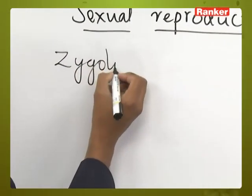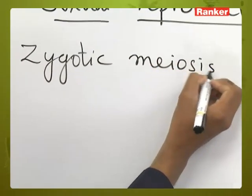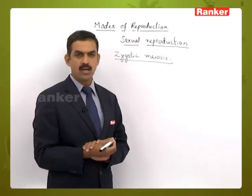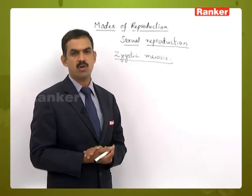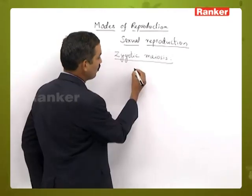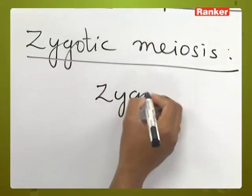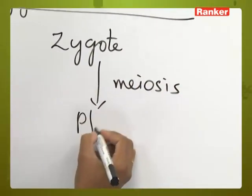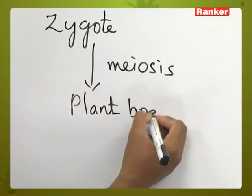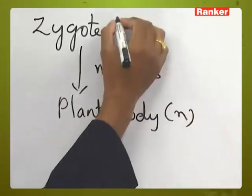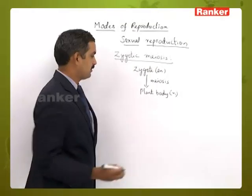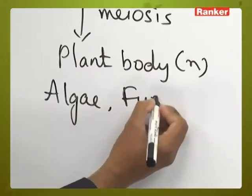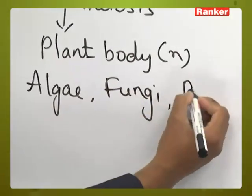The first is zygotic meiosis. Zygotic meiosis occurs in lower organisms where the plant body is in haploid condition, where the zygote will undergo meiosis to produce the plant body, which is haploid in condition. This type of organization can be seen in the majority of algae, fungi, and also in bryophytes.